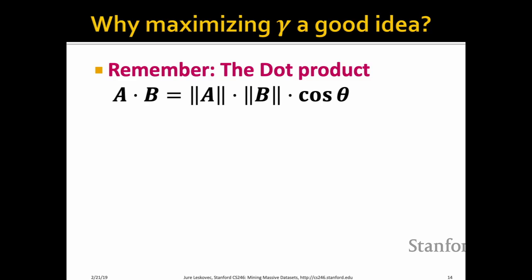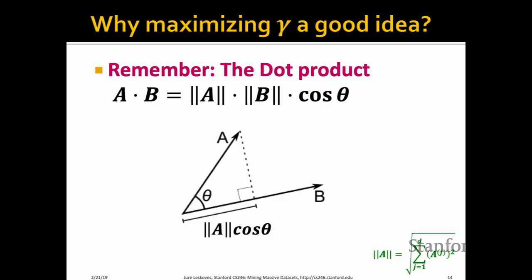A quick refresher on the dot product: if you want to take the dot product between A and B, we take the norm of vector A, the norm of vector B, and multiply by the cosine of the angle between them. The geometric interpretation we'll use is that A·B is the projection of A over the vector B. This geometric interpretation is very useful for understanding why the hyperplane correctly splits our training points.